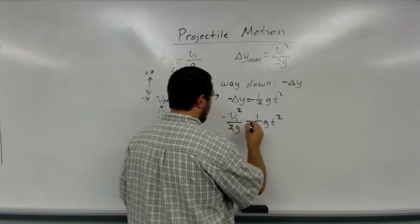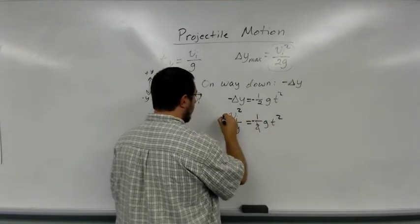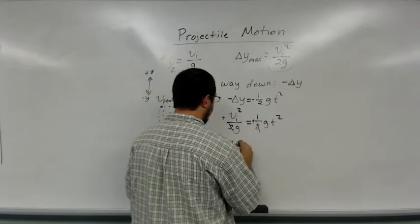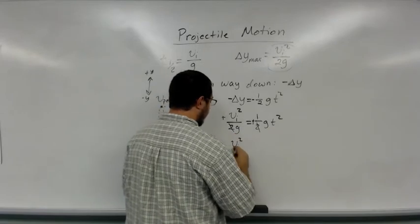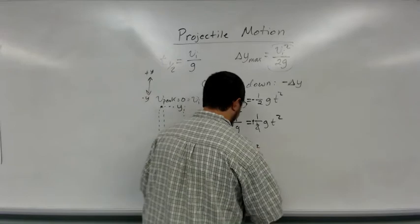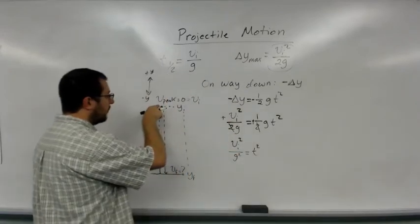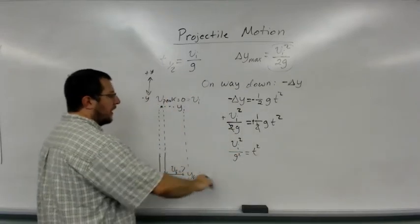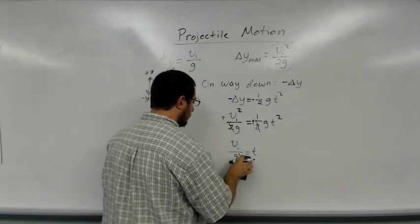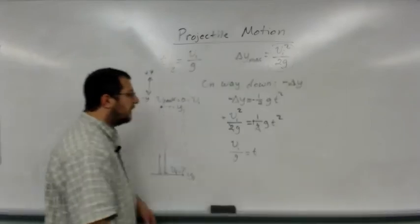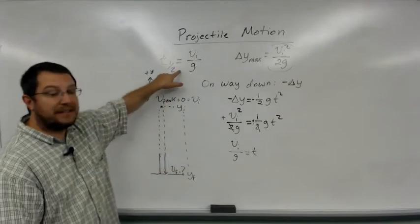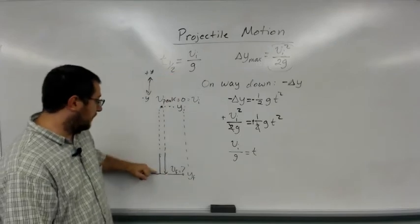If I divide both sides by g, I get g² in the denominator, and that equals t². So the time it takes to fall, I can find by taking the square root: t = vi/g. We can see that the time it takes to fall from here to here is exactly the same as the time it took to get from here to here.